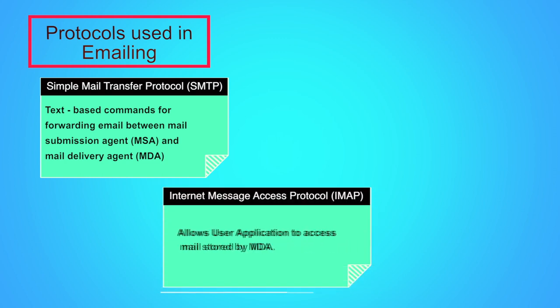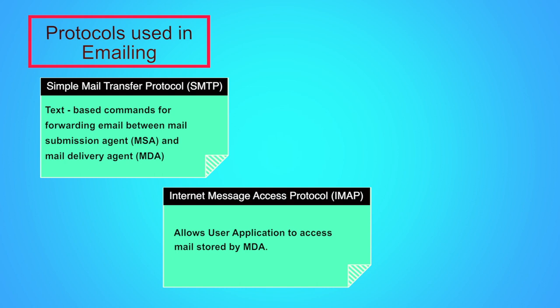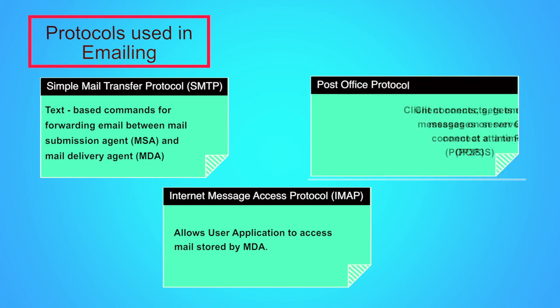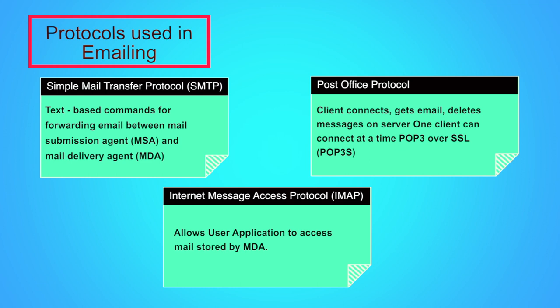Internet Message Access Protocol — IMAP — is a protocol which allows a user application to access mail stored by the mail delivery agent. It supports several clients connected to the same mailbox and separate retrieval of MIME parts of a message, such as attachments. IMAP over SSL is also used, abbreviated as IMAPS. Post Office Protocol is another popular mail-retrieval protocol where the client connects, gets email, and deletes messages on the server, with one client connecting at a time. POP3 over SSL is an example, abbreviated as POP3S.